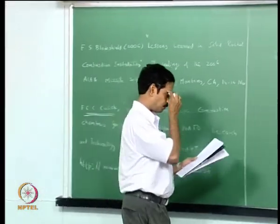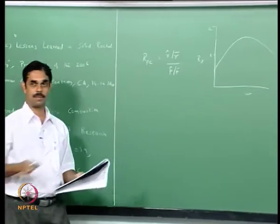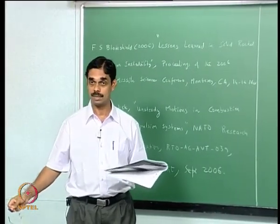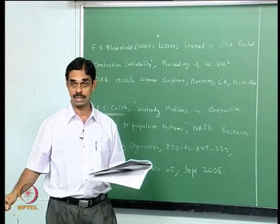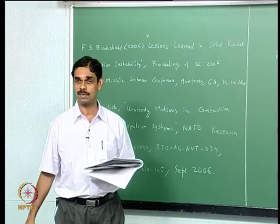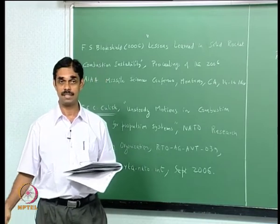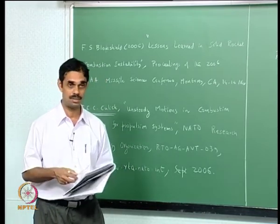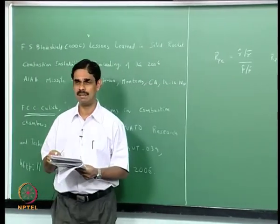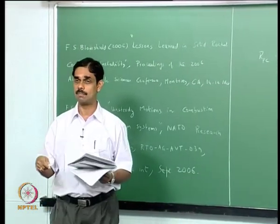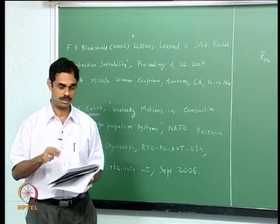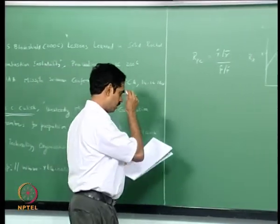We must measure the propellant response because that is the input to the stability program for calculating alpha. There is no way to simply guess the propellant response — it is a function of various parameters, so it is a non-trivial task. There are many ways to measure the propellant response. I will tell you the most popular way, which is called using a T burner.